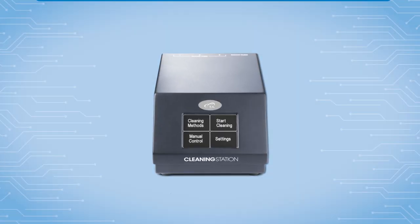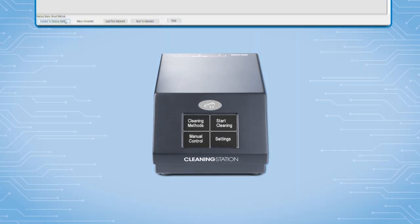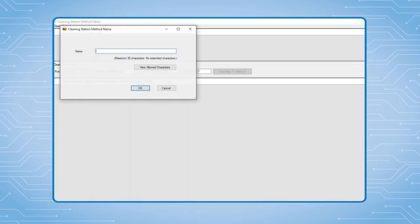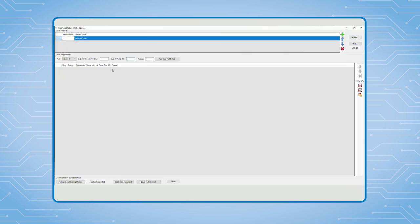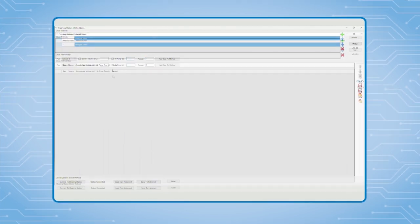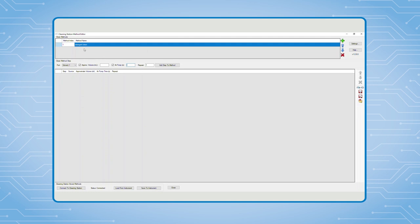The standalone software used to write, edit, and transfer methods is called Cleaning Station Editor. When writing a method, the first step is to name the cleaning procedure and then add this procedure. Multiple method names can be written and subsequently loaded onto the device. After the file has a name, the protocol is created.